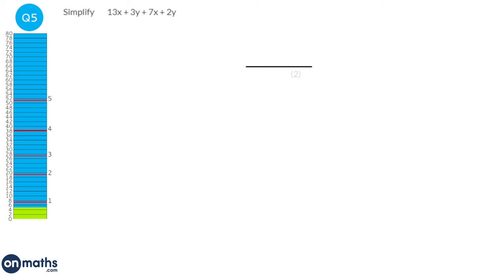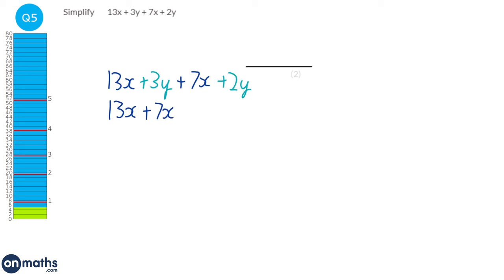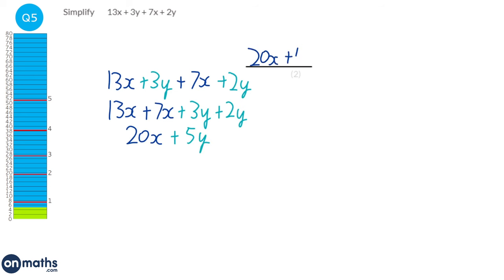When collecting terms you have to collect like terms. We've got 13x and 3y — they're not like terms. But 13x is a like term to 7x, and 3y is a like term to 2y. Putting the x's together: 13 lots of x plus 7 lots of x is 20x. For the y's: 3 lots of y plus 2 lots of y is 5y. So our answer is 20x plus 5y.